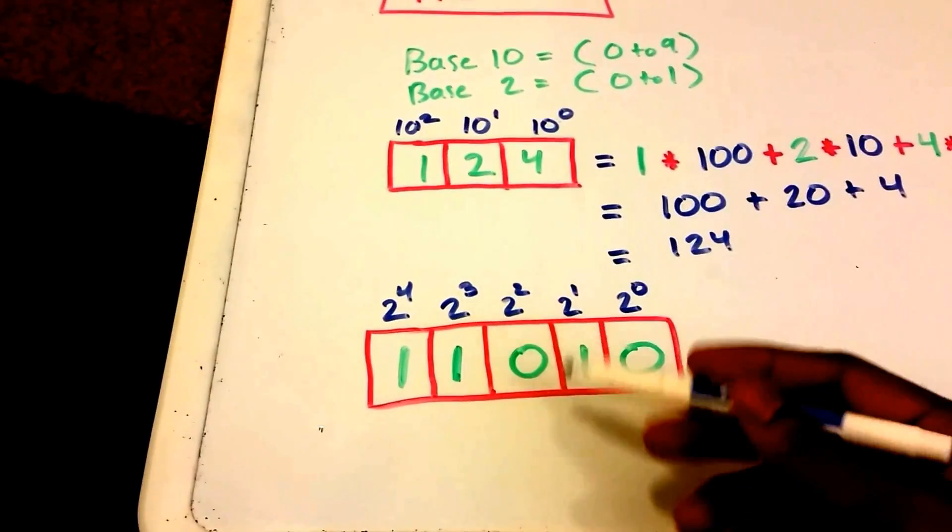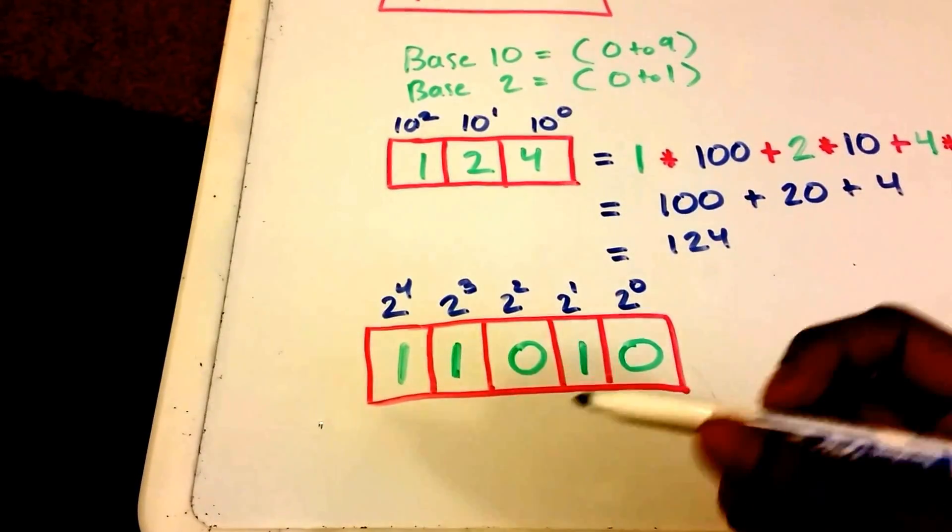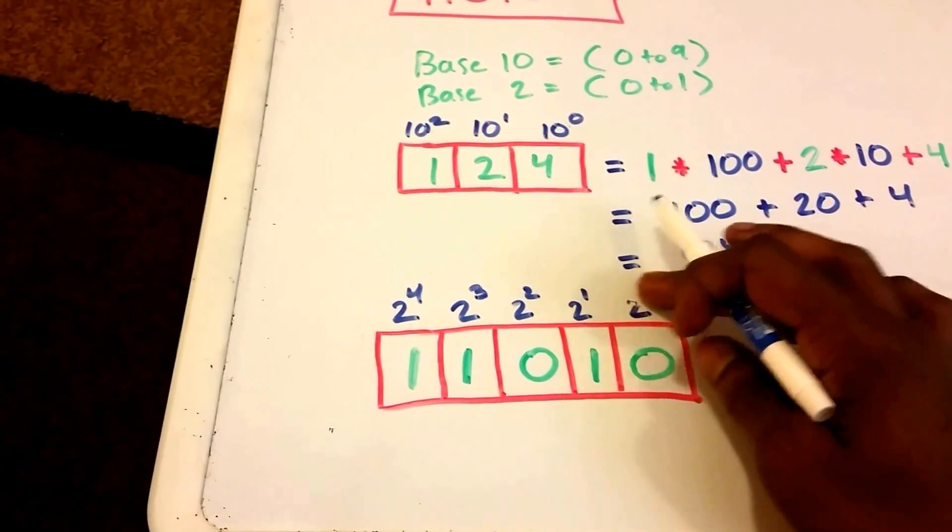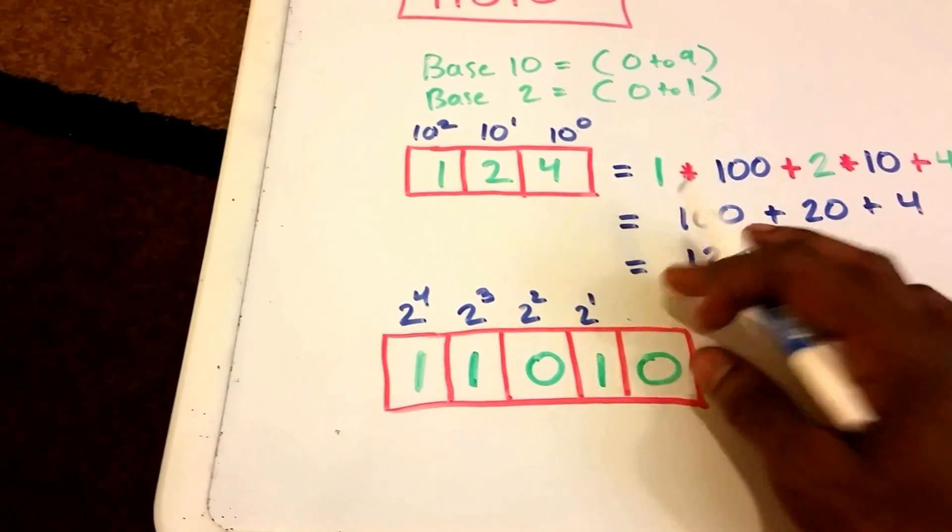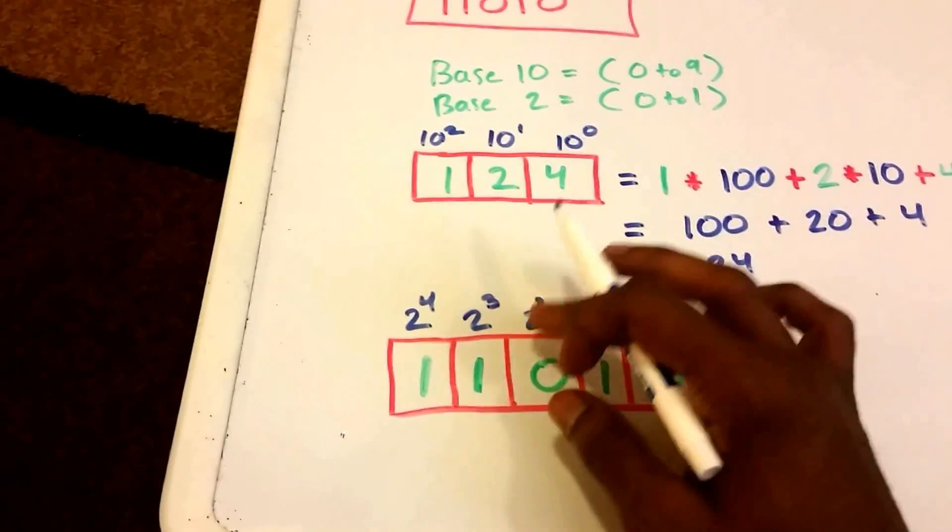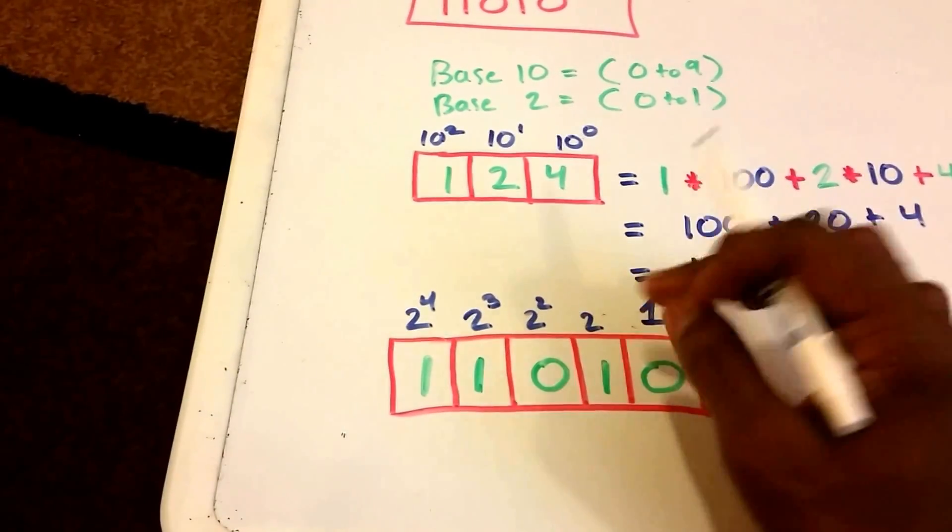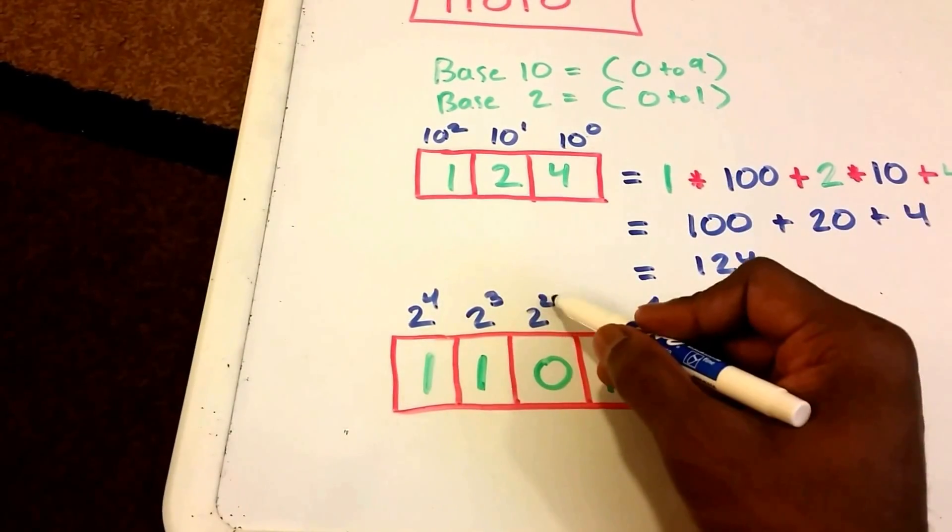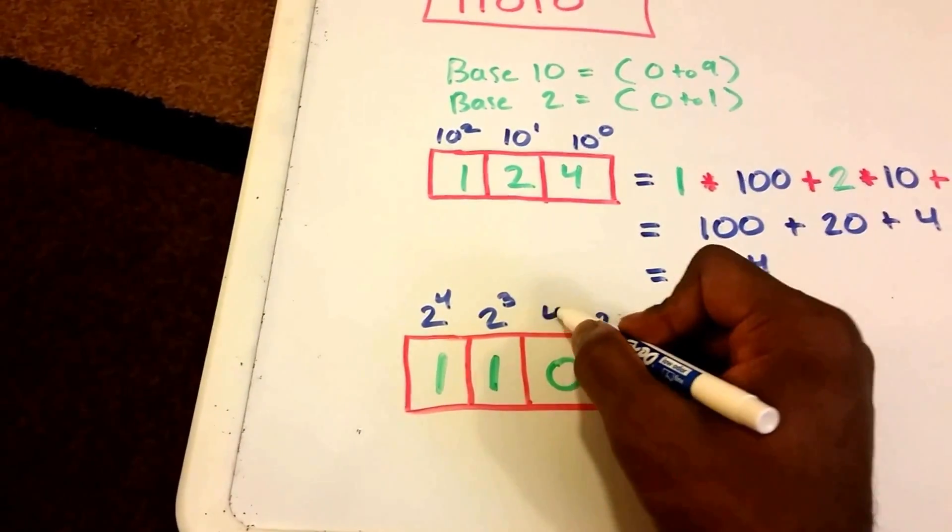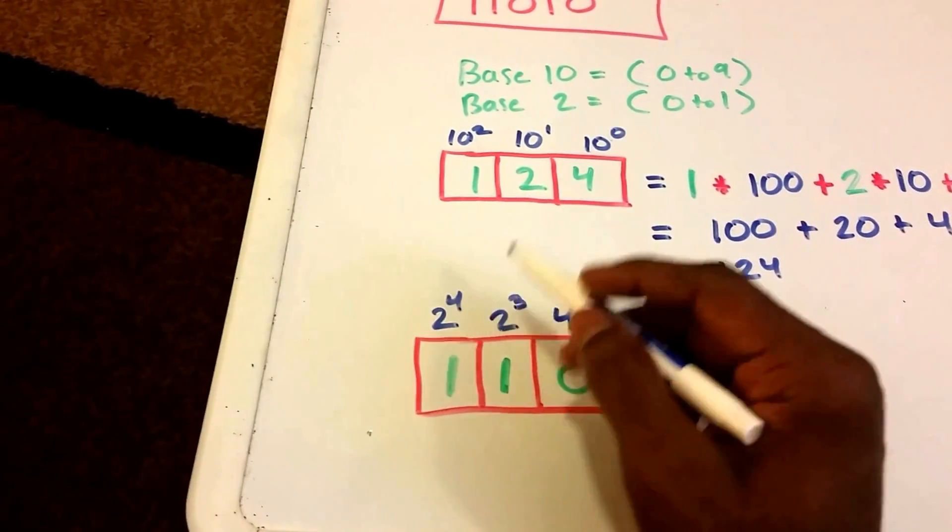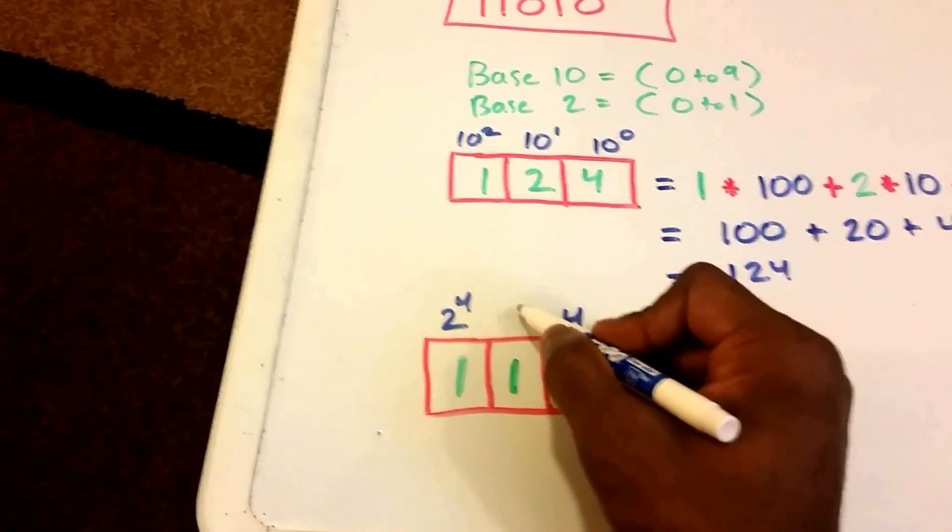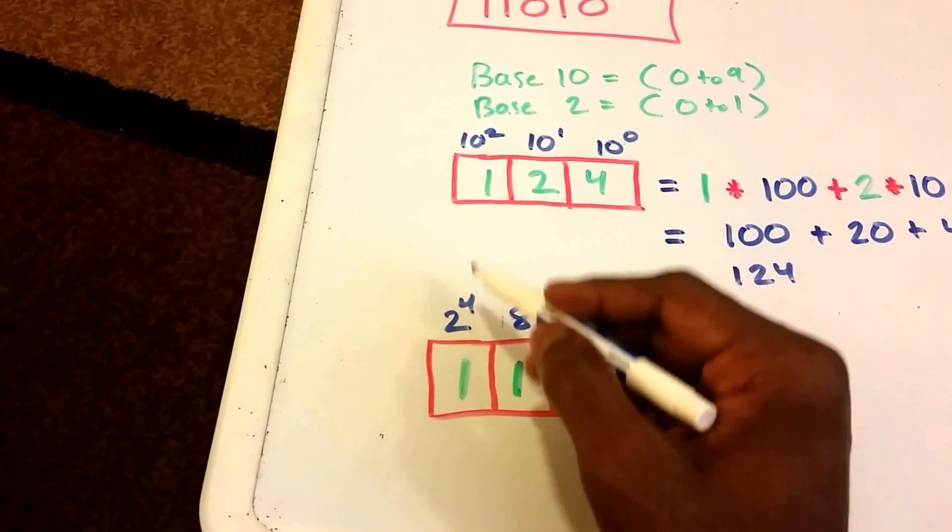Okay, and so what does that equal in decimal form? Well, 2 to the power of 0 is just 1, so I can rewrite this here. I'm going to put 1. 2 to the power of 1 is just 2. 2 to the power of 2 is 4, so I put 4 here. 2 to the power of 3 is 8, so I can put 8 here. And 2 to the power of 4 is 16.